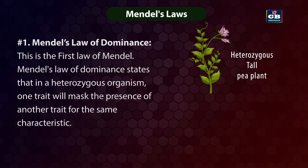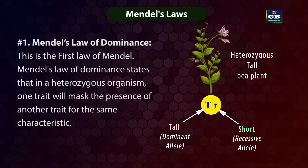Mendel's law of dominance: In a heterozygous tall pea plant, the plant has two different alleles — tall and short. Even though the plant has the short allele, its tallness is expressed because the tall allele is dominant over the short allele. Mendel's law of dominance states that in a heterozygous organism, one trait will conceal the presence of another trait for the same characteristic.